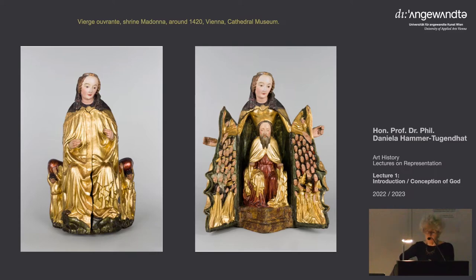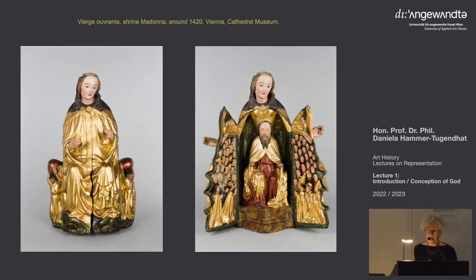We have it here in Vienna in the Dommuseum. Unfortunately, neither the Christ child, nor the crucifixion, nor the dove has been preserved. The gently flowing folds of Mary's cloak and the treatment of her facial features indicate that this figure belongs to the so-called soft or international style and dates from approximately 1420. The larger Shrine Madonnas were undoubtedly displayed on the altar, whereas the smaller ones were reserved for private prayer.